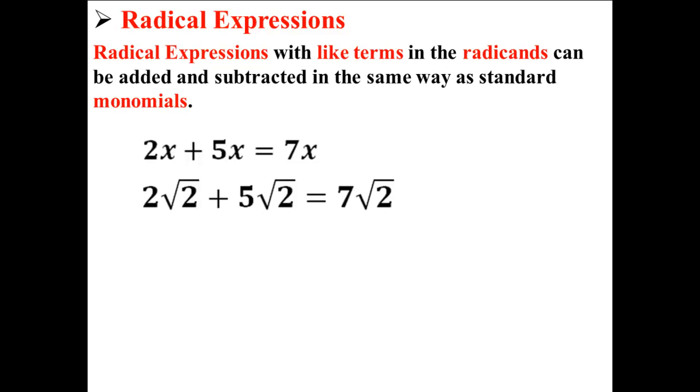Here we have an example with radicals. 2√2 plus 5√2 is equal to 7√2. As you can see, it works much in the same way.